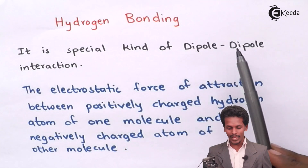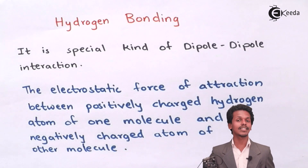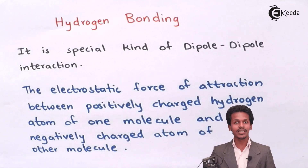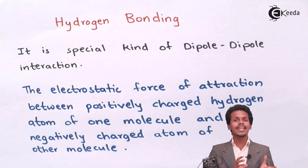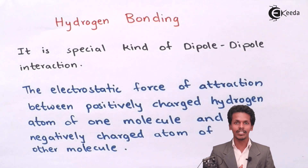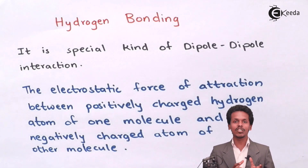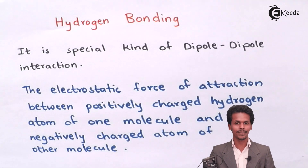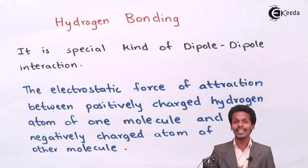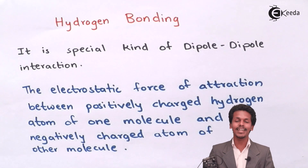Hydrogen bonding is a special kind of dipole-dipole interaction. In dipole-dipole interaction, which we covered in our previous videos, it was based on the electronegativity difference between two atoms — one being partially positively charged and one being partially negatively charged. Similarly, hydrogen bonding is based on that concept, but it includes something else and something special.